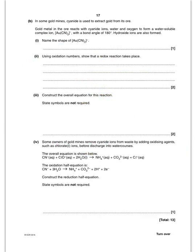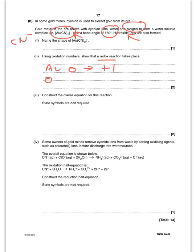Looking at some gold chemistry — a complex ion with two cyanide ions around a gold ion with a bond angle of 180 degrees will be linear in shape. Using oxidation numbers to show a redox reaction has taken place: gold starts at oxidation state zero and in the complex [Au(CN)₂]⁻ it is +1, since each CN⁻ ligand means gold must be +1 for the overall −1 charge. Oxygen is reduced from 0 to −2 in hydroxide.